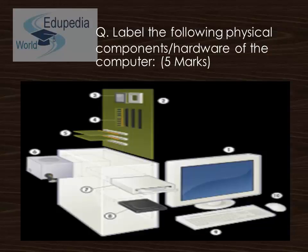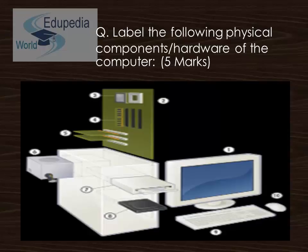Now we have a question to label the physical components or hardware of the computer. Ten labels are given and we have to name these ten devices. At label one we have the monitor; at label two, the motherboard; at label three, the central processing unit; at label four, random access memory; and at label five, the expansion cards.